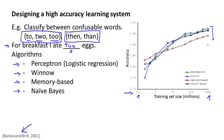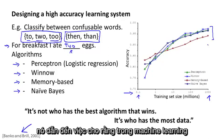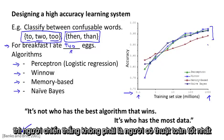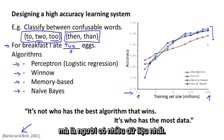But what can really drive performance is if you can give the algorithm a ton of training data. And this is, results like these has led to saying in machine learning that often the machine learning is not who has the best algorithm that wins, it's who has the most data.